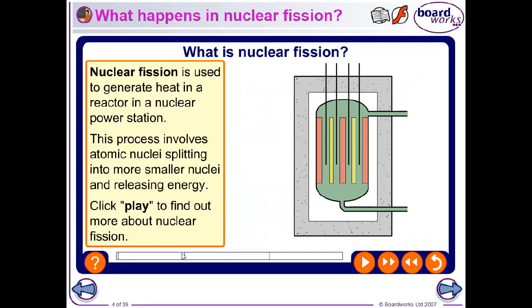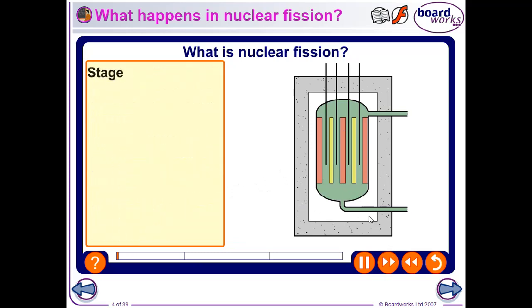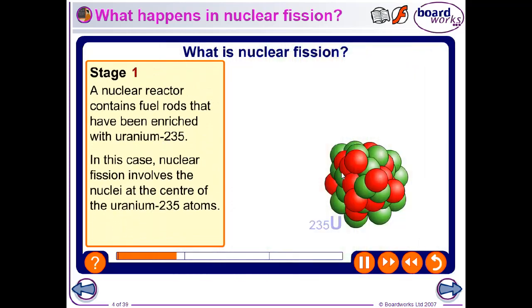So nuclear fission is how we generate the heat in a nuclear power station. So first of all, we put these fuel rods, uranium-235 enriched uranium-235, into the reactor. These are called the fuel rods. And the fission is going to happen in the nucleus of this uranium-235.